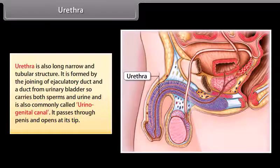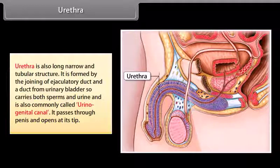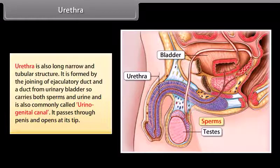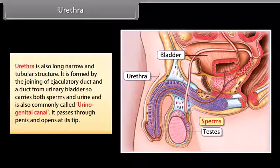The urethra is also a long, narrow and tubular structure. It is formed by the joining of the ejaculatory duct and duct from the urinary bladder, so it carries both sperms and urine, and is commonly called the urinogenital canal. It passes through the penis and opens at its tip.